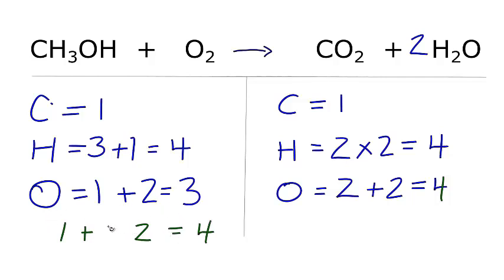If I multiply three over two times two, the twos cancel out, and I'm left with a three. So one plus three will give me four. And if I put my three over two in front of the oxygen, the equation's balanced.